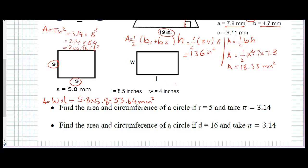Now for the rectangle. Area of rectangle equals width multiplied by length. Here the width is 4 and the length is 8.4, so the area equals 8.4 times 4, which is 33.6 inches squared.